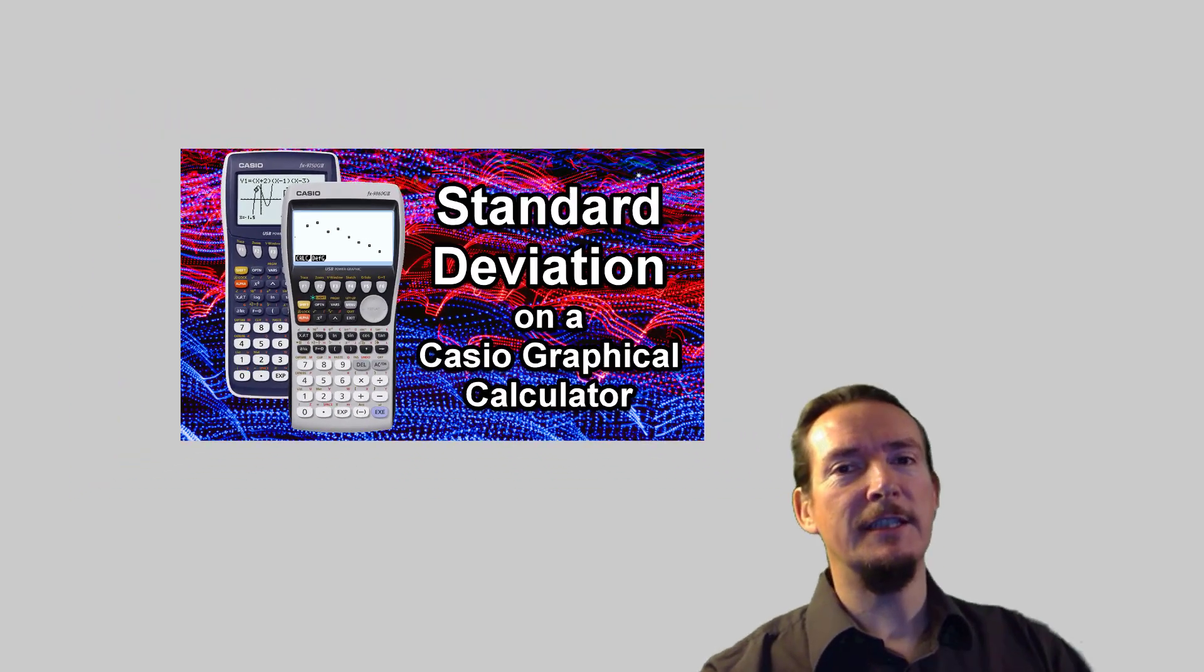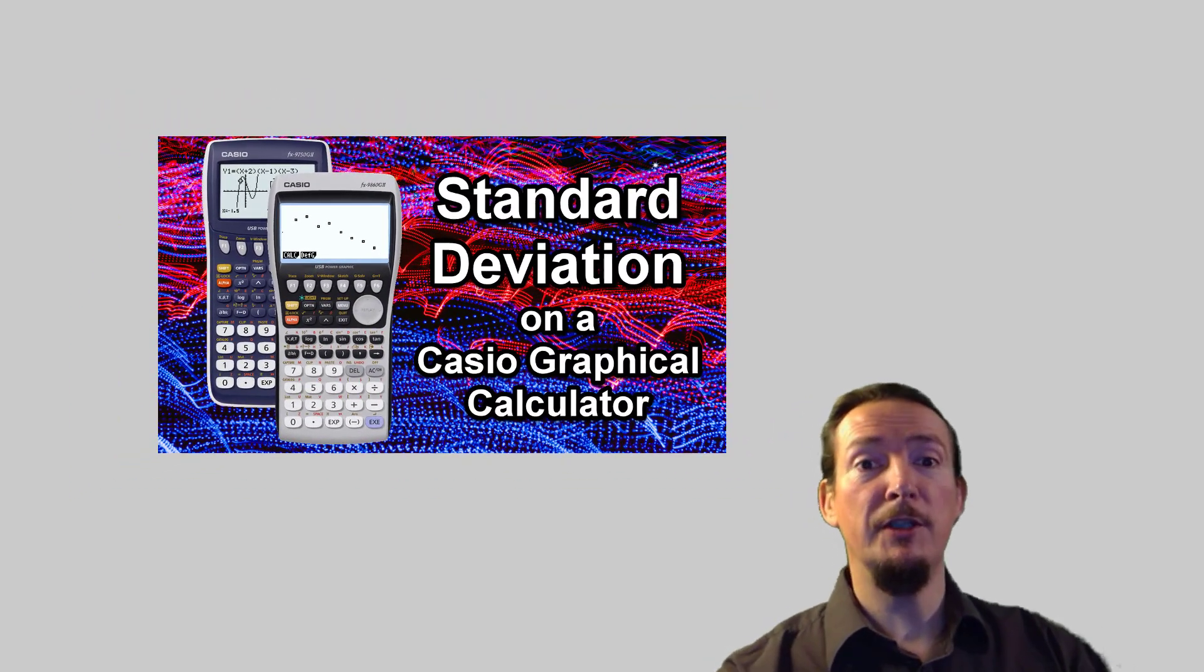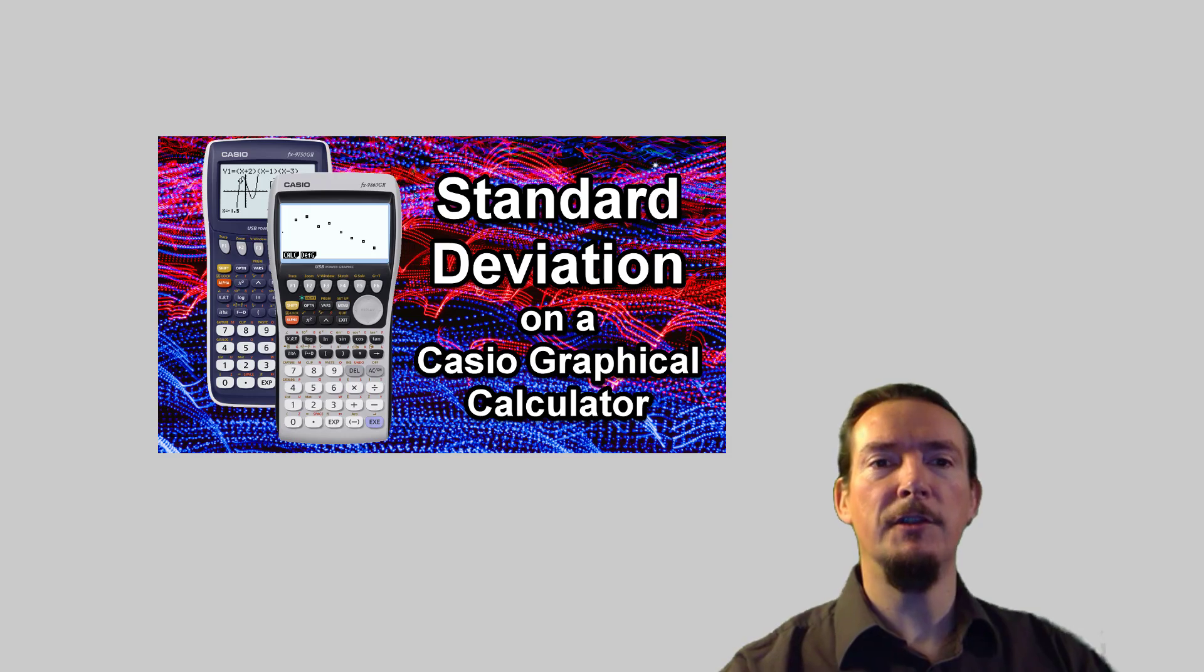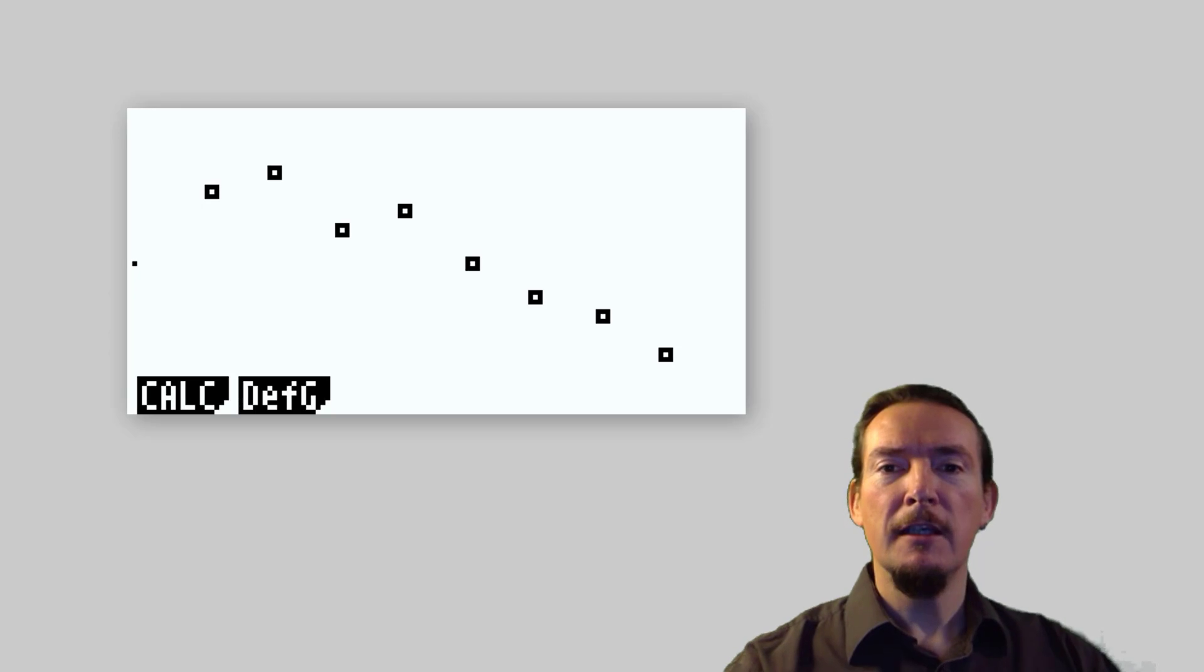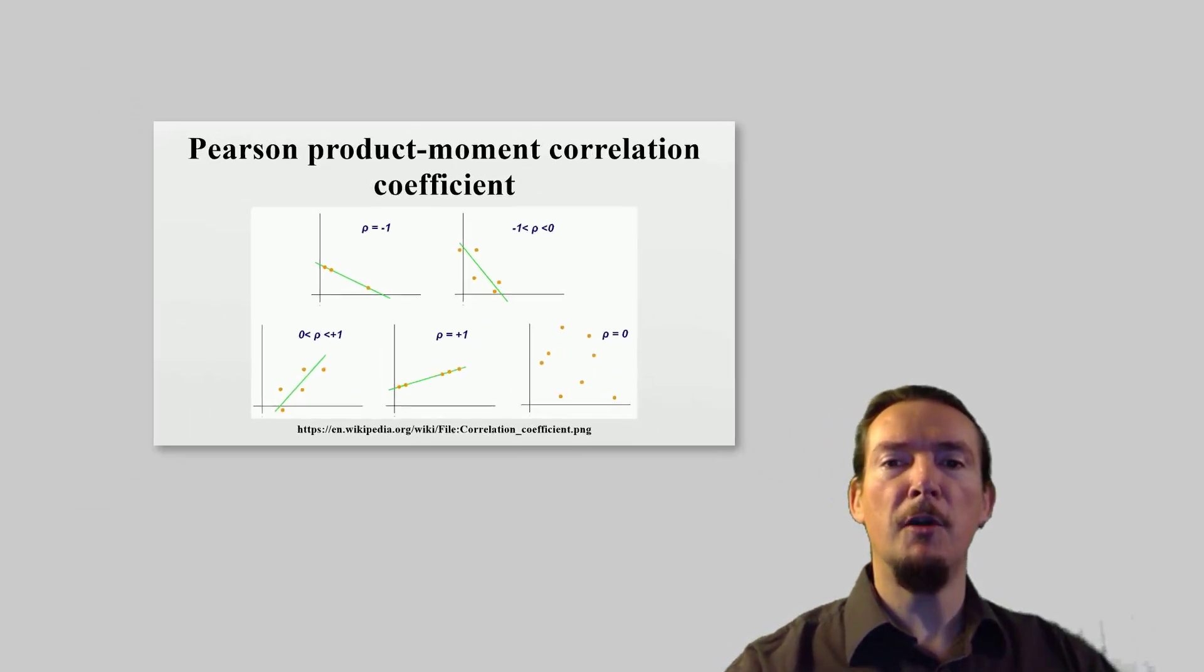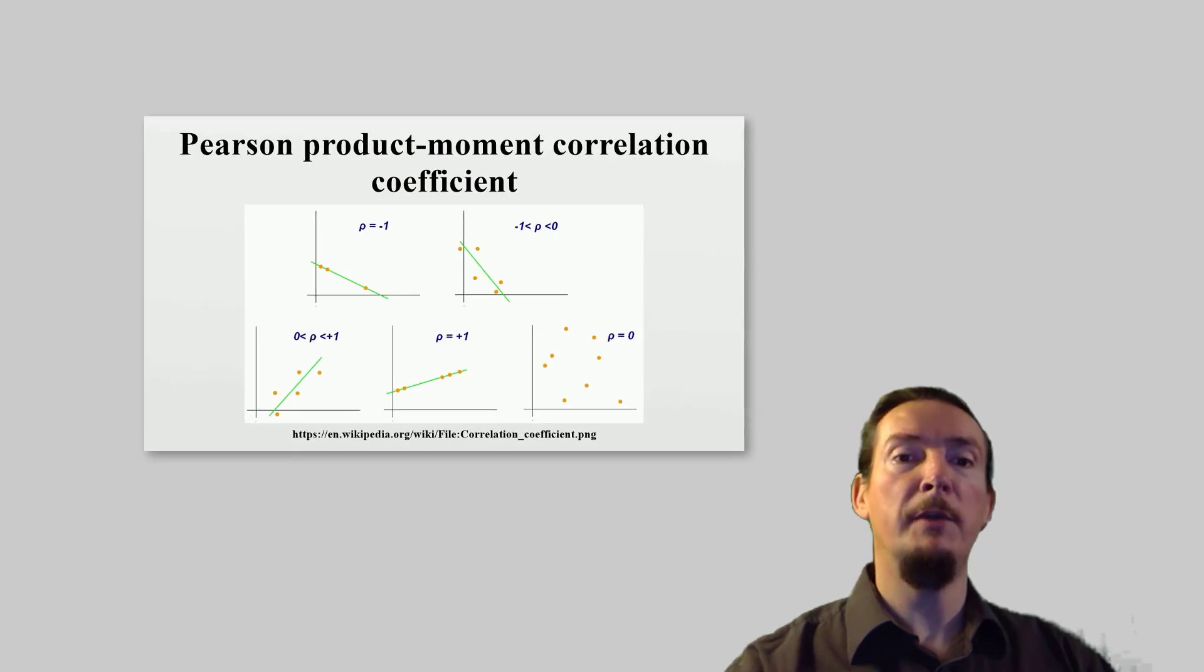In the last video, we looked at the single variable calculation function and we used it to find mean and standard deviation. This time, we will be looking at how the Casio graphical calculator copes with two-variable or bivariate data. We will be using the graphing tool to plot a scatter graph and the two-variable calc function to generate a value for the Pearson's product-moment correlation coefficient, or PMCC.